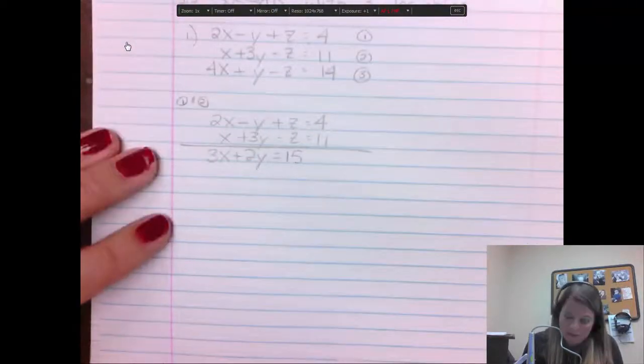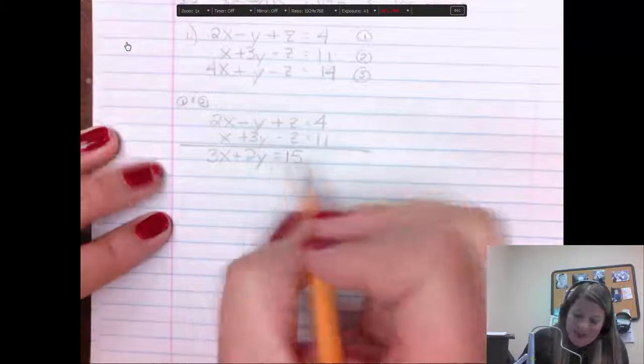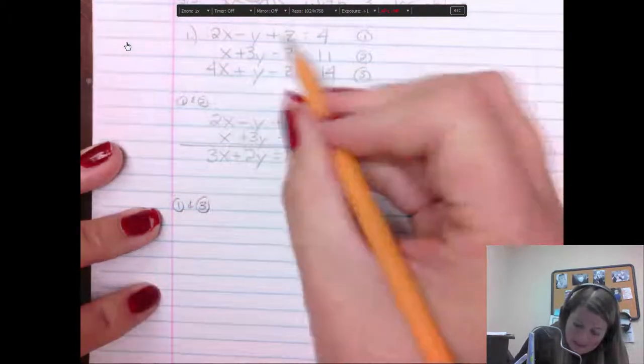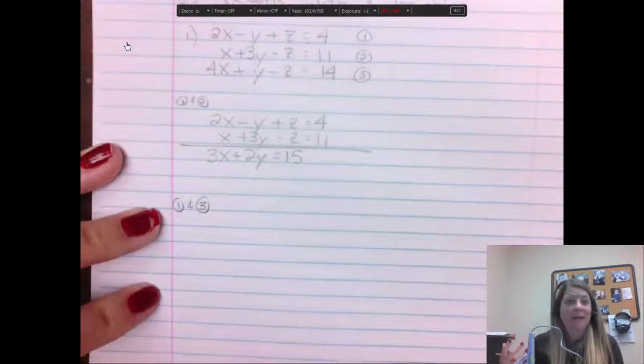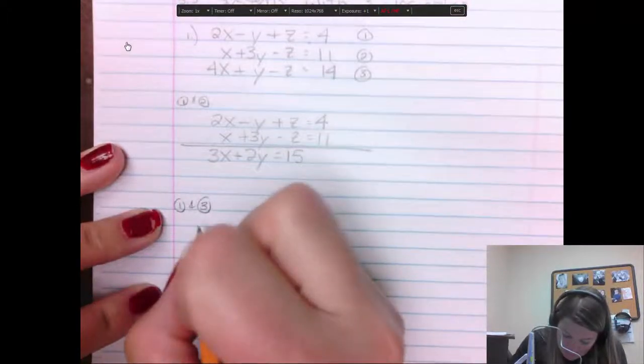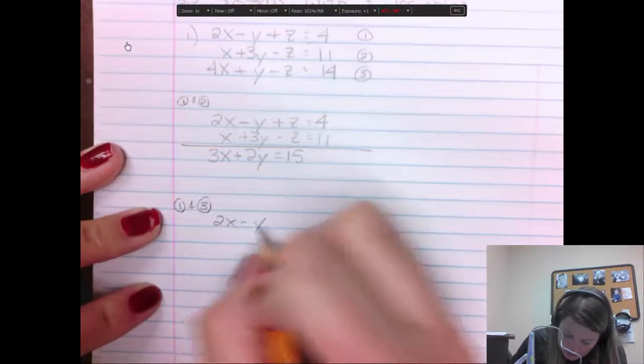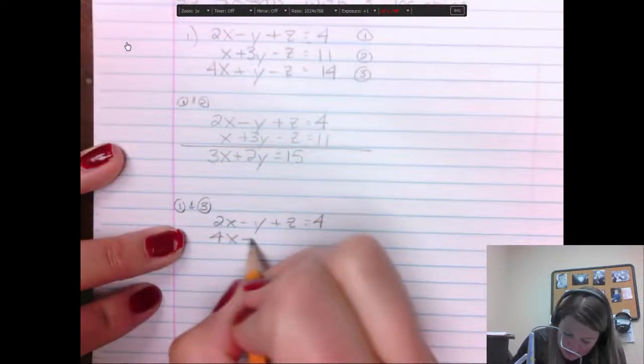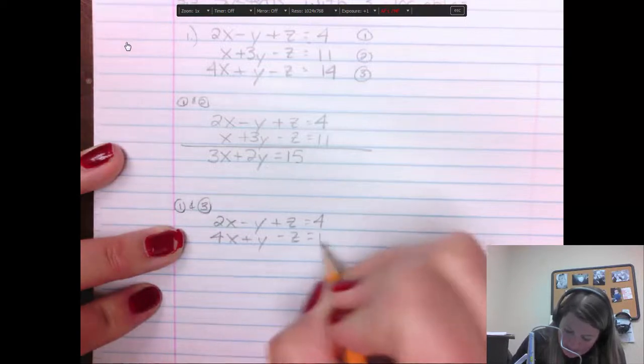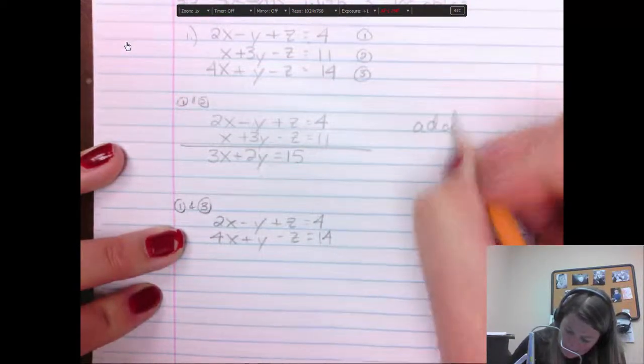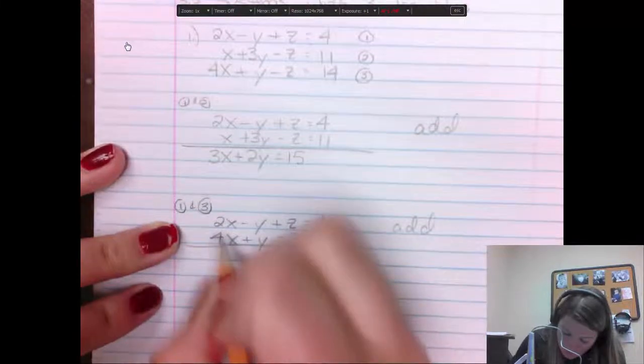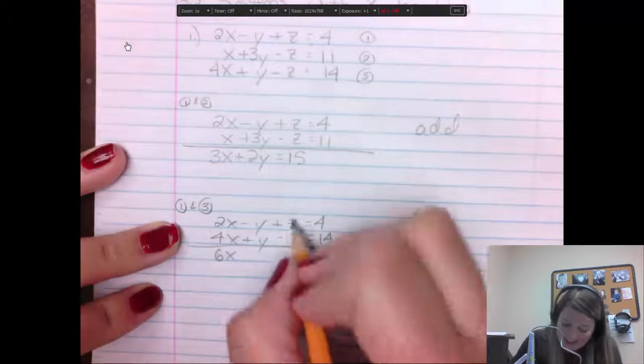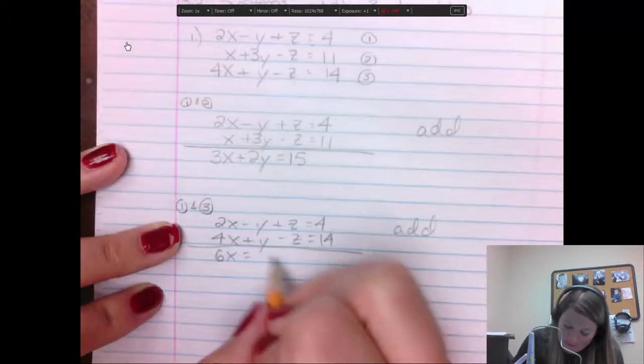So if I do this, if I add these down, 2x plus 1x is 3x. Negative 1y plus 3y is a positive 2y. 1z minus 1z is 0. So I'm going to just write my equals. And 11 and 4 are going to make 15. So here's our new equation. It does not have a z. That's what I want for the next step, too. I want to pair two other equations and eliminate the z. So I'm going to pair 1 and 3. And again, that's just because plus z and negative z, I don't even have to multiply by anything. They're all set up pretty.